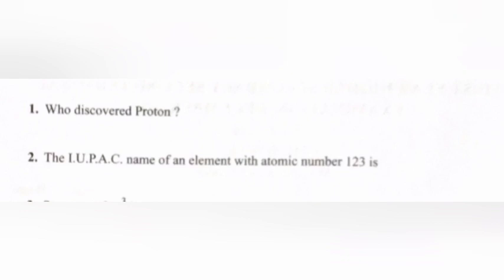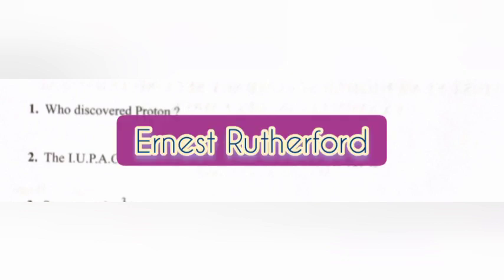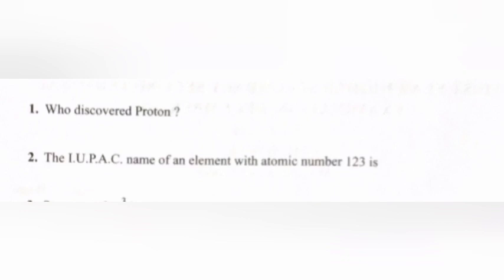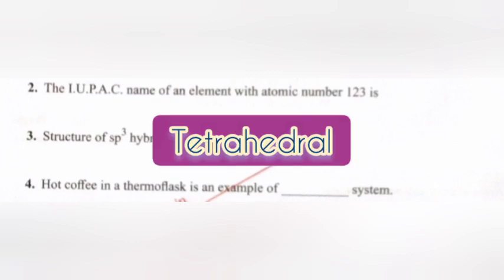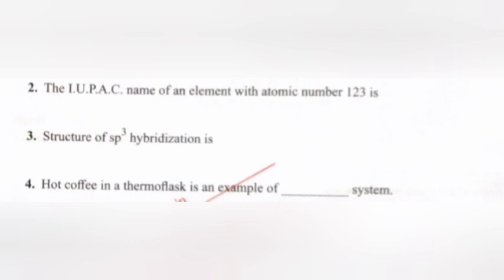Question 1: Who discovered the proton? Answer: Ernest Rutherford. Question 2: The IUPAC name of an element with atomic number 123 is answer: Unbetrium. Question 3: The structure of sp3 hybridization is answer: tetrahedral.